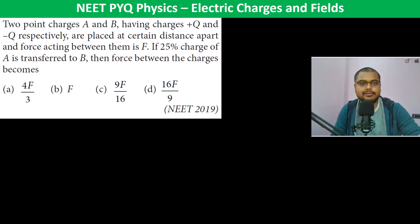Two point charges A and B having charges +Q and -Q respectively are placed at a certain distance apart. Let's say the distance is d. The force acting between them is F = kQ²/d².